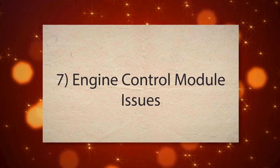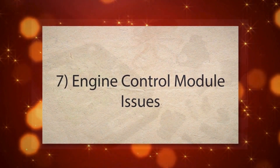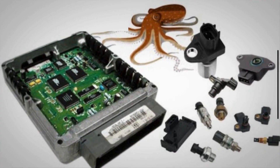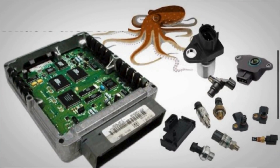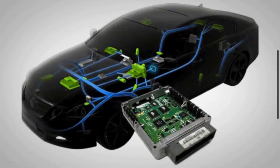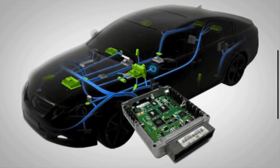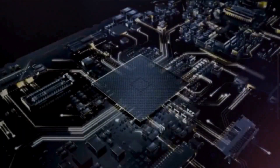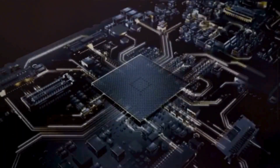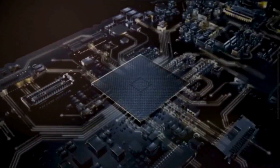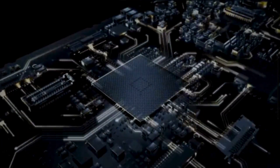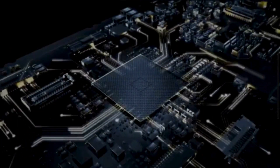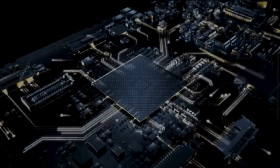The seventh cause is engine control module issues. The engine control module controls the timing and amount of fuel and spark for each cylinder, relying on various sensor inputs to make these decisions. A malfunctioning ECM can incorrectly time the spark or fuel injection for Cylinder 2, causing a misfire.